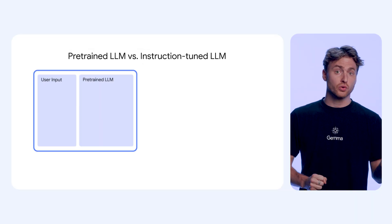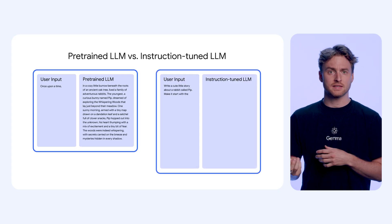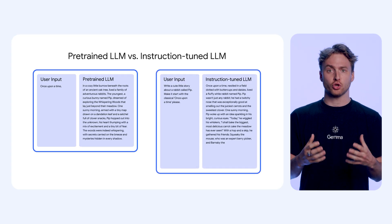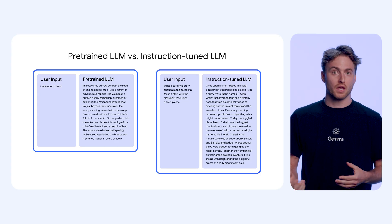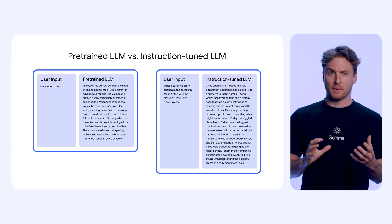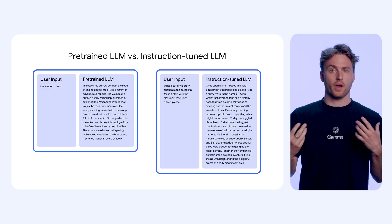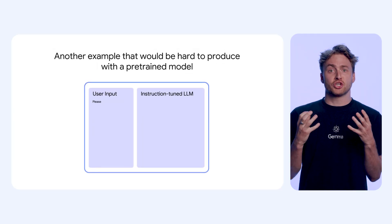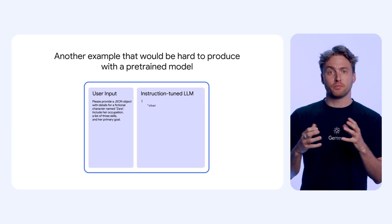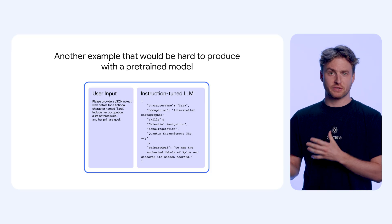The model then goes through instruction tuning. During this second phase, we turn this next token predictor into an actual chatbot. Using specific data and formatting, we make the model answer the user query rather than just output the next most probable answer. This training phase shapes the model's behavior and personality, adopting a helpful and safe persona.